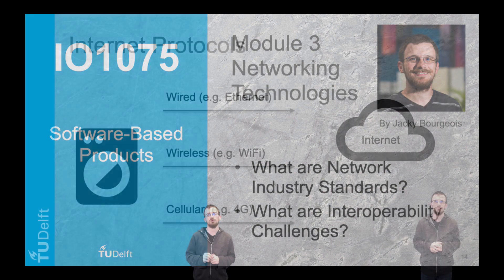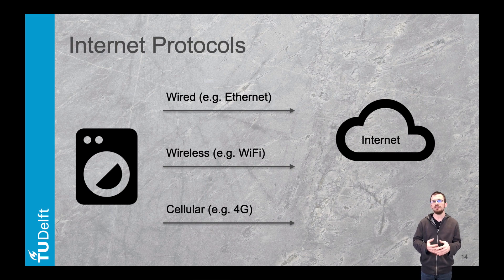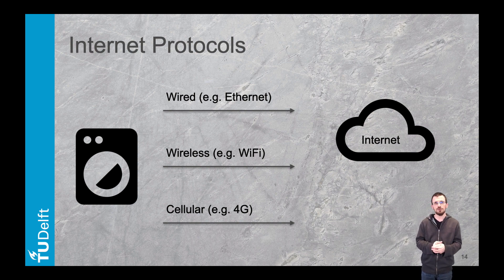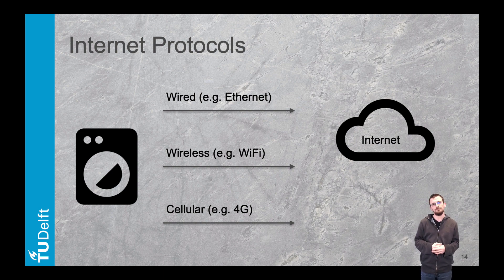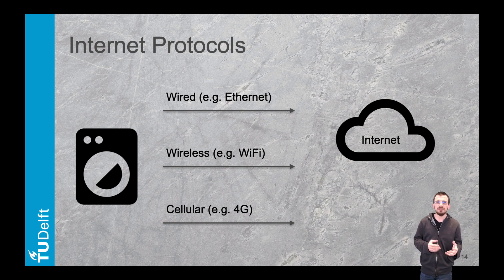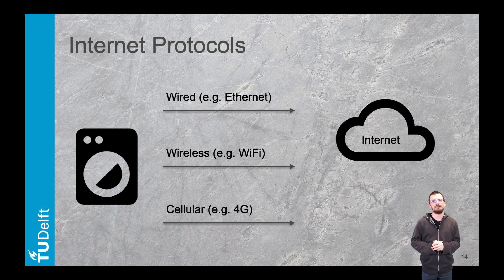Exploring the different internet architectures, we saw that we can connect to a local IP network at home or on campus, but we can also connect to the IP network directly via a cellular connection — the so-called 4G. Here we have two IP wireless networks, but with a major difference: the area that is covered.